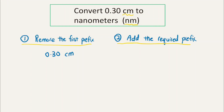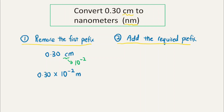First, we need to remove the prefix from the first unit. Starting from 0.30 cm, the prefix in centimeters is 'centi', which has a value of 10 to the power of minus 2. To remove it, we multiply 0.30 by the value of this prefix, which is 10 to the power of minus 2, and we get 0.0030 meters.